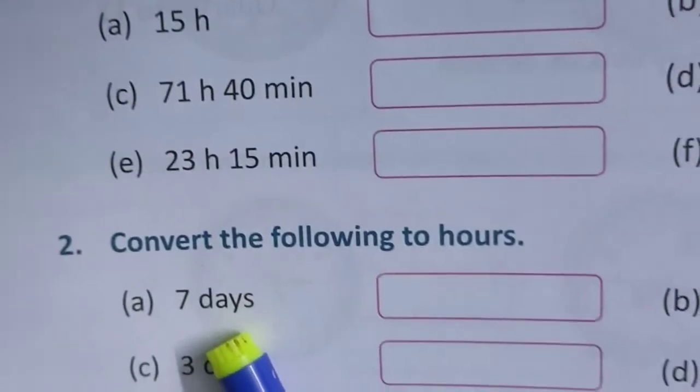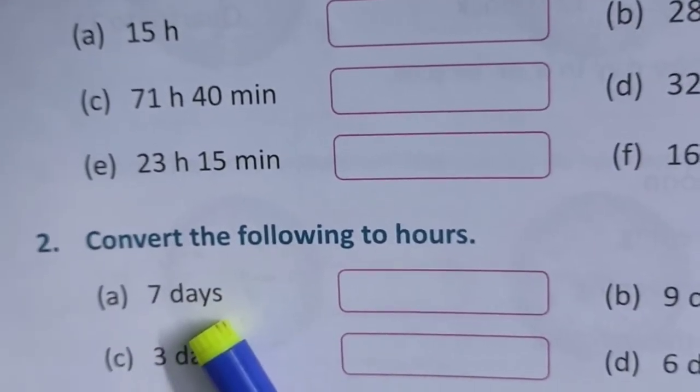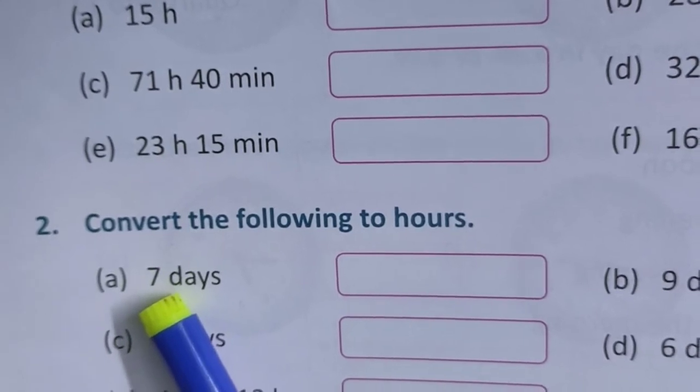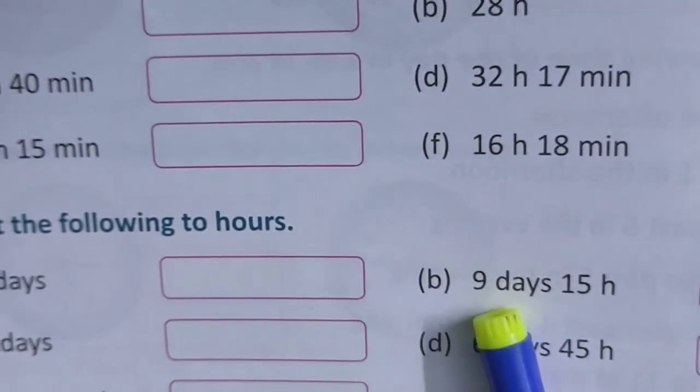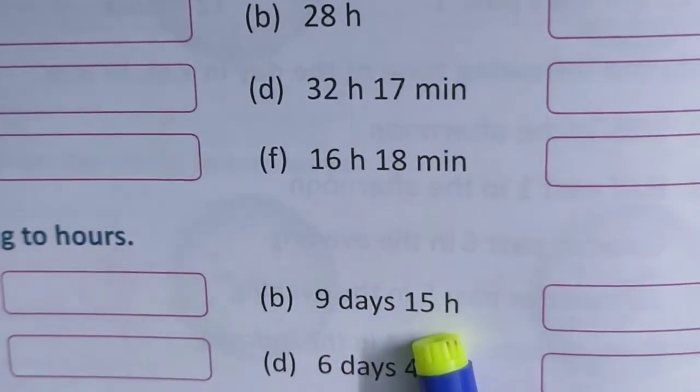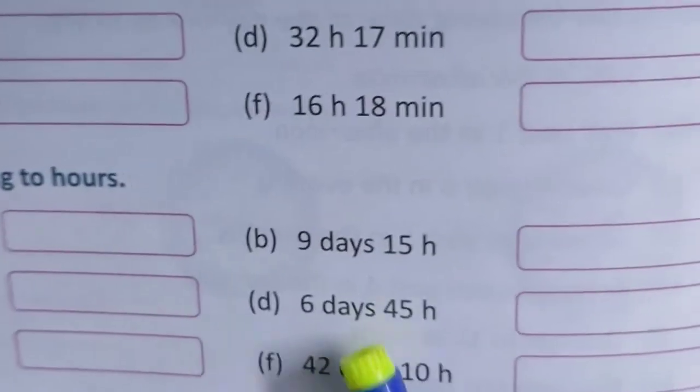Convert the following to hours. 7 days. 1 day is equal to 24 hours. 24 into 7. Write it here. 9 days 15 hours. 9 into 24, then add 15. Okay. Thank you.